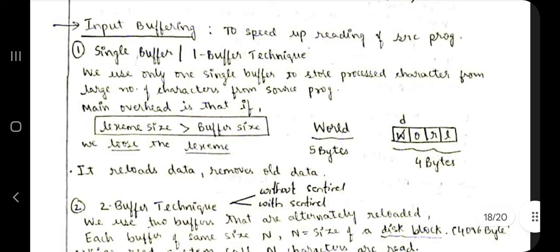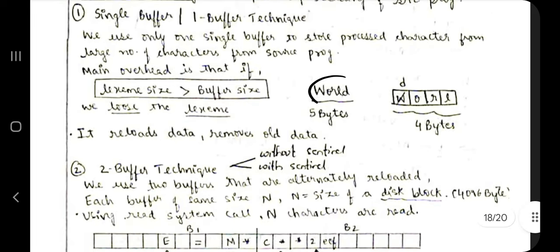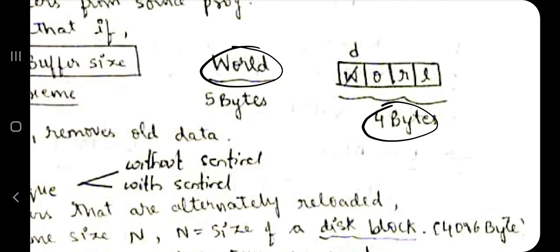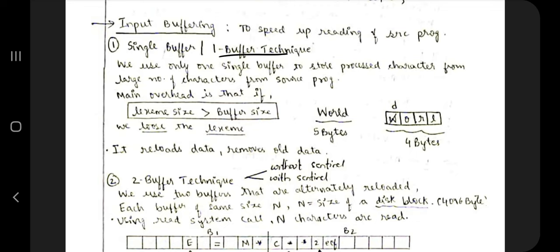Input buffering uses buffers — similar to a cache — to speed up reading of the source program. For example, if 'world' is five bytes but only four bytes of space are available, the letter 'D' wraps back to the first position, corrupting the data. This is the problem with the single buffer technique, which is why a two-buffer technique is used instead.